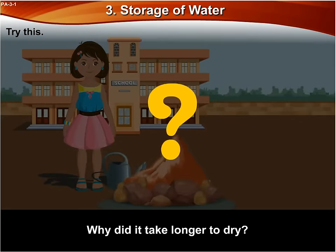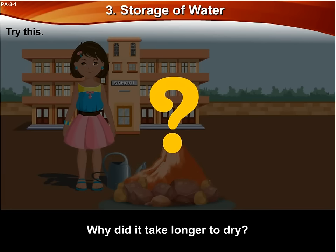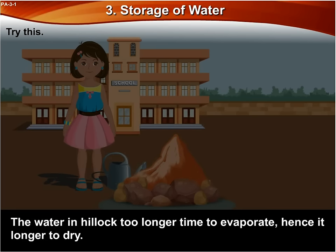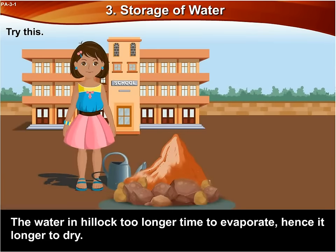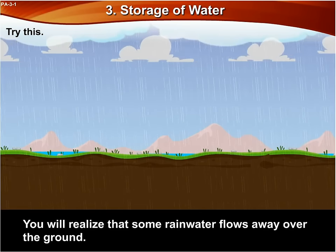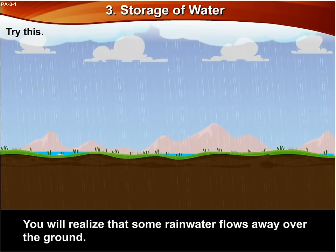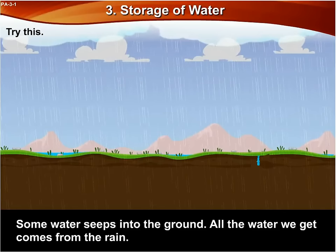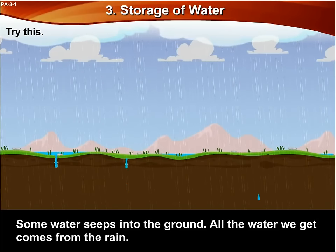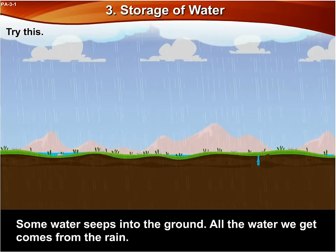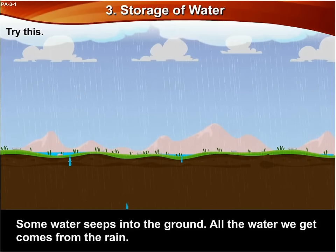Why did it take longer to dry? The water in the hillock took longer time to evaporate, hence it took longer to dry. You will realize that some rain water flows away over the ground, and some water seeps into the ground.